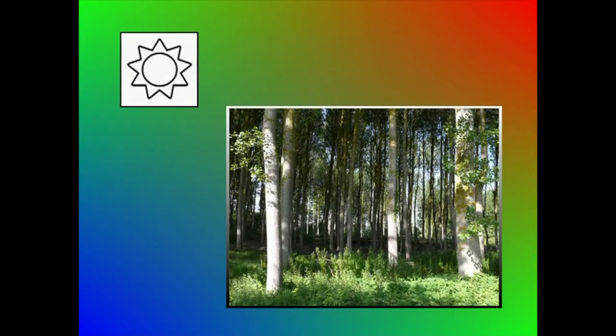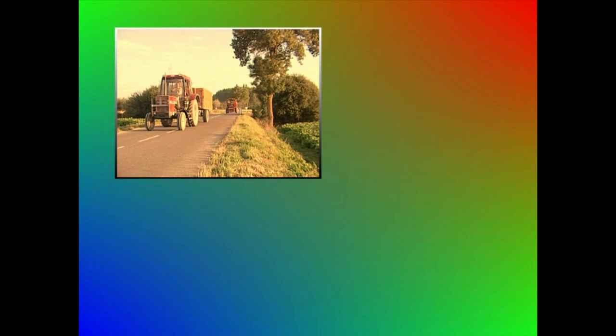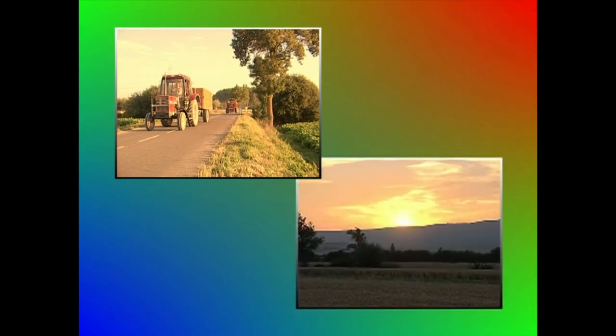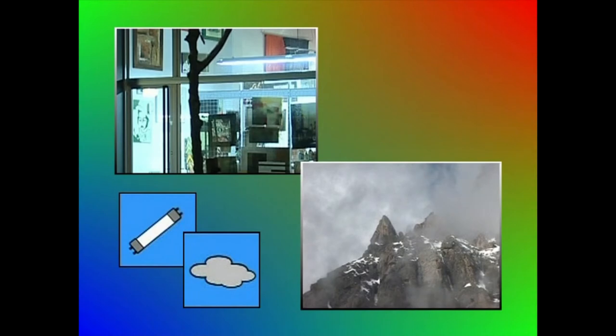Eguzkiaren argiak, argi naturalak, argazkiko objektu zuriak zuri agertzen ditu. Lanpara baten argiak aldiz, objektu zuri horiek laranja kolorekoak agertzen ditu. Eta objektu zuri horiek argiztatzeko kandela baten argia baliatzen bagara, are gorrixkagoak agertuko ditu. Egun sentiko eta arratsetako argi naturalarekin ere, argazkiko objektu zuriak laranja kolorekoak agertzen dira. Taularen beste muturrean, objektu zuriak urdinska agertzen dituzten argi motak dauzkagu. Egun goibeletako argia eta hainbat fluorezenteak dira objektu zuriak tonu urdinska erantzen dietenak.